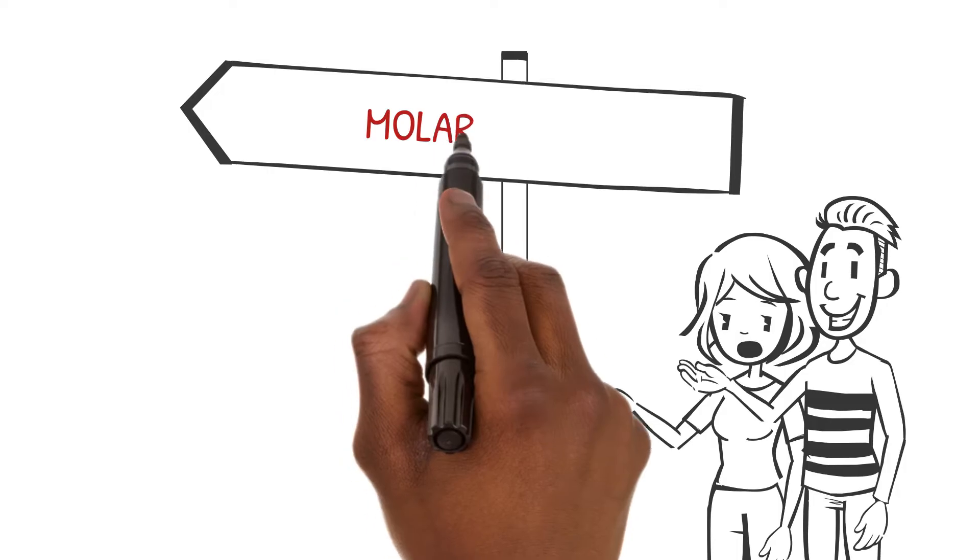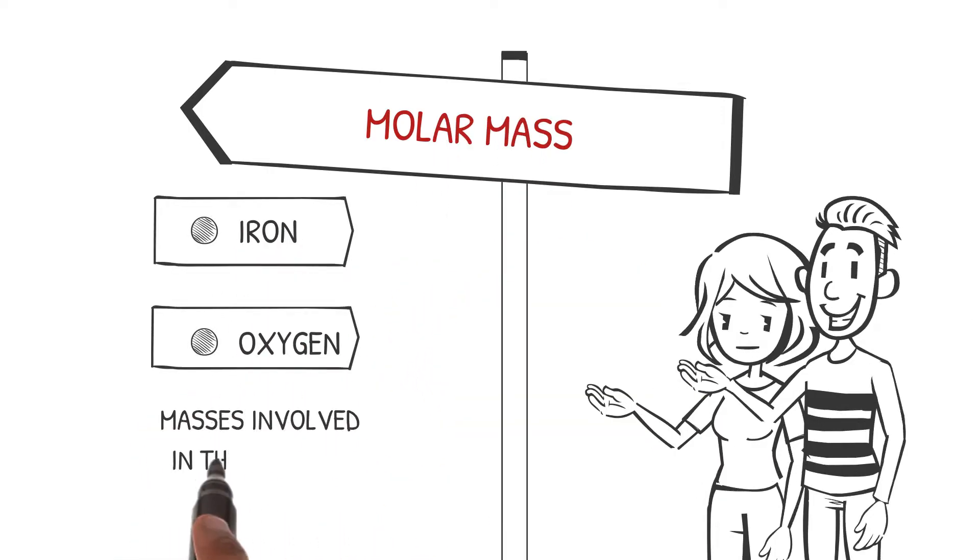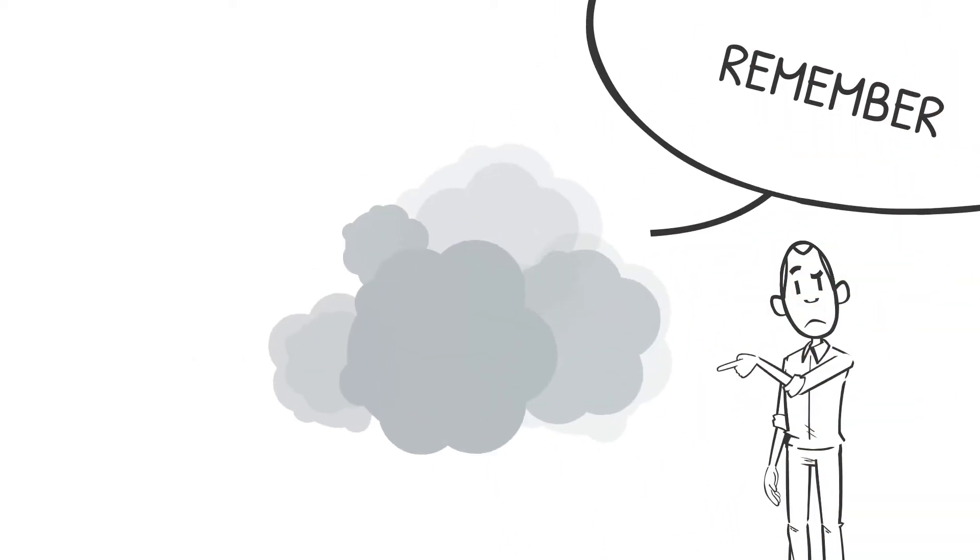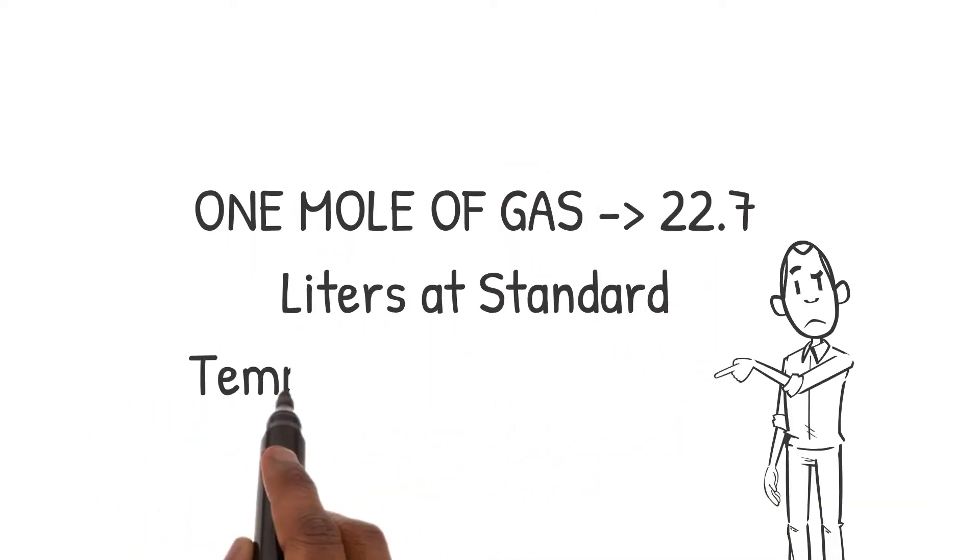By using the molar masses of iron and oxygen, we can also calculate the masses involved in the reaction. And remember, gases have their own special relationship with volume. One mole of any gas occupies 22.7 liters at standard temperature and pressure.